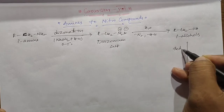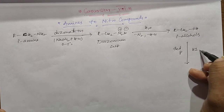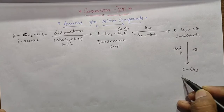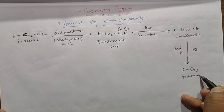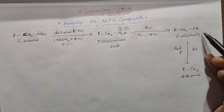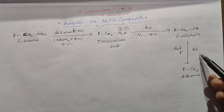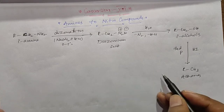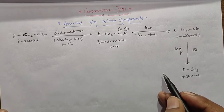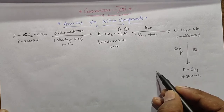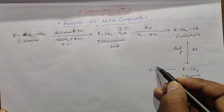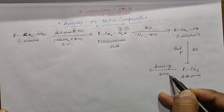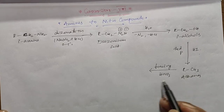In the third step, the primary alcohols react with red phosphorus and hydrogen iodide to form alkanes. Then these alkanes react with fuming nitric acid (fuming HNO3).